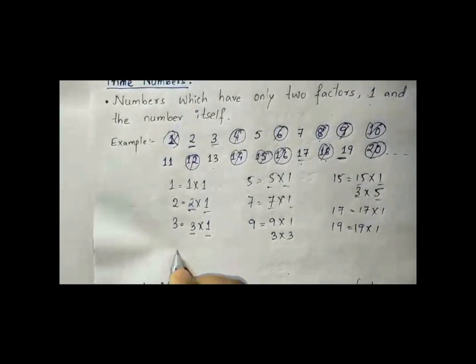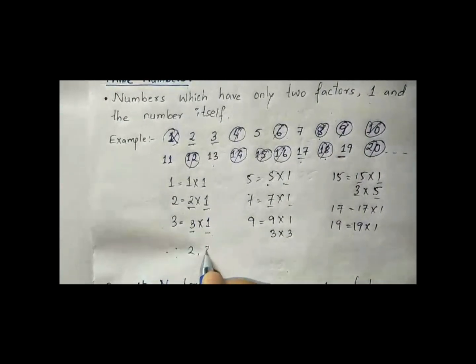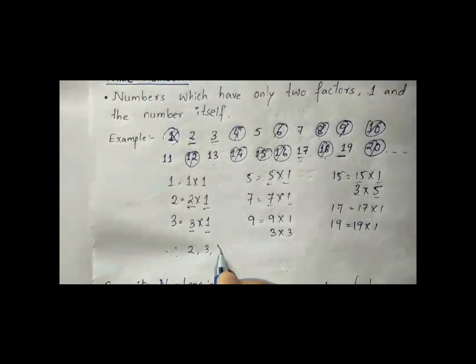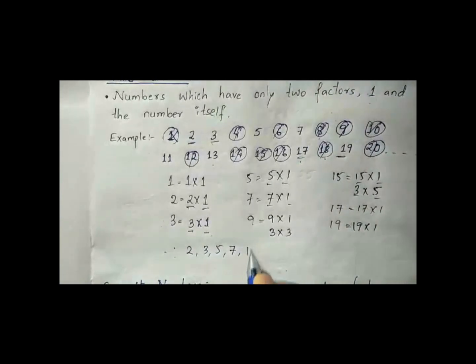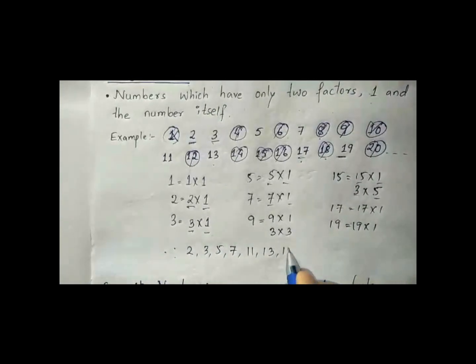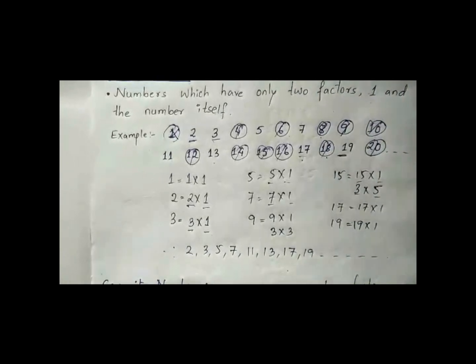So prime numbers are 2, 3, 5, 7, 11, 13, 17, 19, and so on.